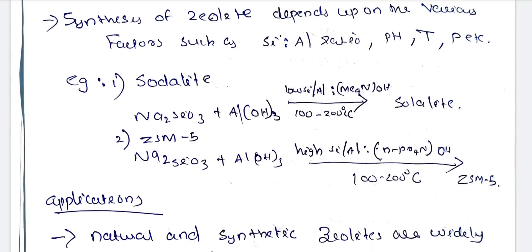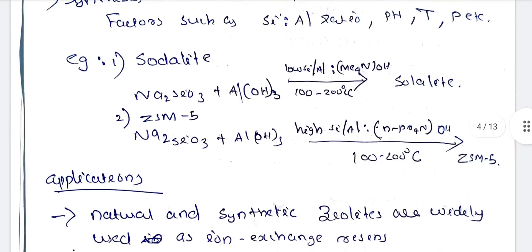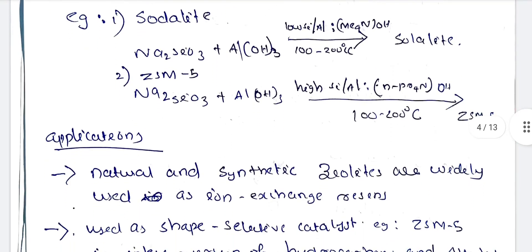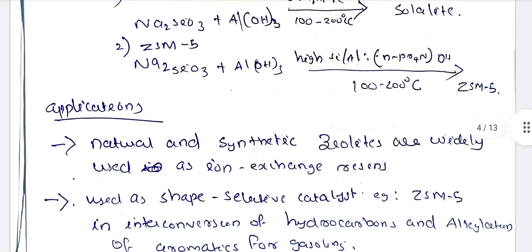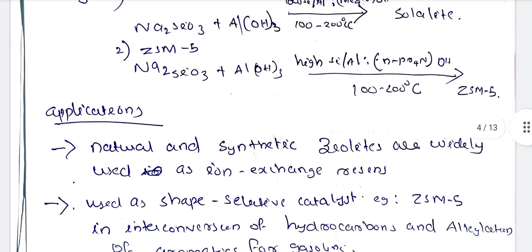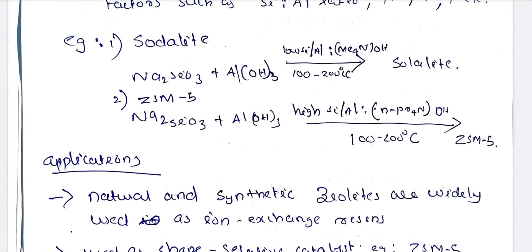One preparation method is sodalite: Na2SO4 plus Al(OH)3 twice gives sodalite. Another important synthetic zeolite is ZSM-5.